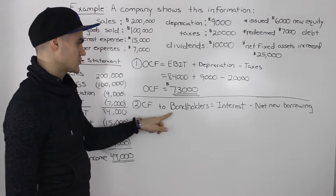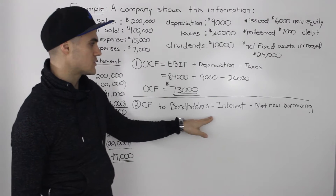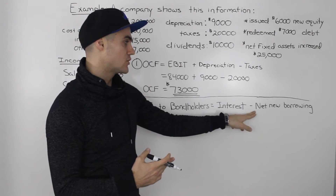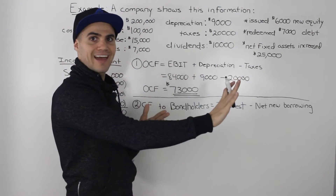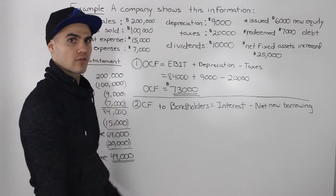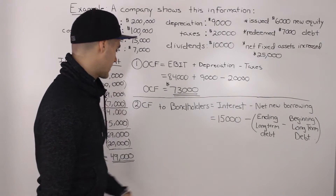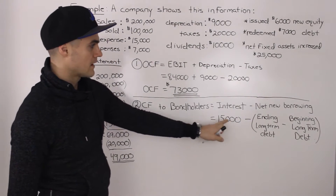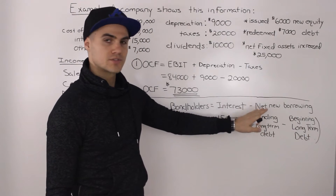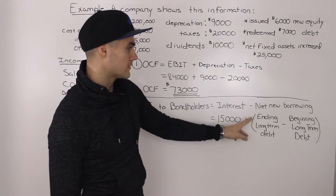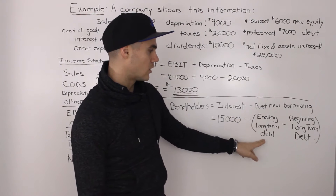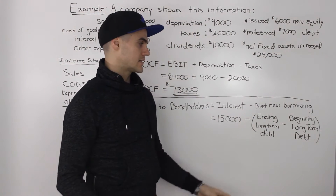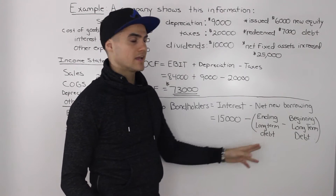The next thing we have to find is the cash flow to bondholders, which equals the interest that the bondholders receive minus the net new borrowing — any money that they lend to the company, which would be an outflow for them. The interest figure we can get from the income statement: it's $15,000. Now let's go into a little more detail on net new borrowing.